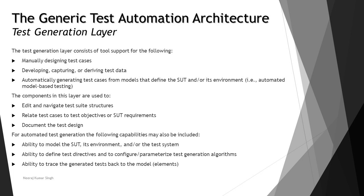The first layer is the test generation layer. The test generation layer consists of tool support for the following: manually designing test cases, developing, capturing, or deriving test data, and automatically generating test cases from the models that define the SUT and its environment. These are activities where tool support can be helpful during the generation layer.